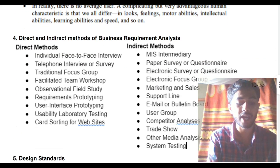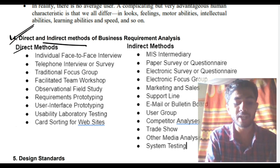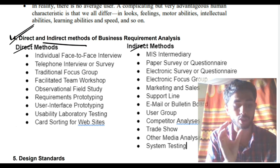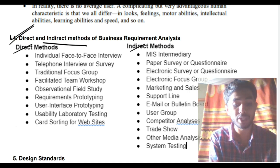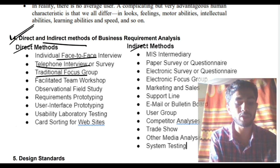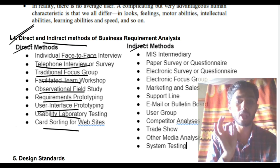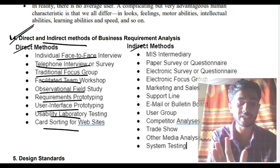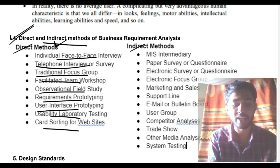Moving on to the fourth super important question, we have direct and indirect methods — never miss this question, it is the most expected and most important. Direct means you are doing it directly — these are offline methods. Direct methods include: individual face-to-face interview, telephone interview, traditional focus group, facilitated team, observational field study, requirement prototyping, testing, card sorting, library testing, team workshops, and group meetings. Everything comes under the direct methods of business requirement analysis.